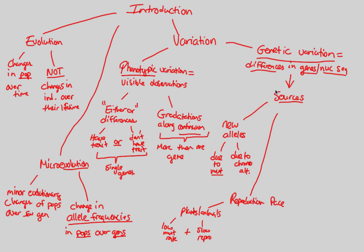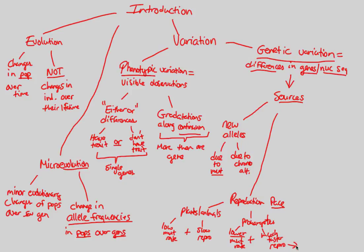Reproduction pace influences genetic variation. To understand it best, compare something slow and low to something different — prokaryotes. Prokaryotes actually have a lower mutation rate than we do, so why mention them in terms of reproduction pace? Because prokaryotes like bacteria have an absolutely much faster reproduction rate than we do. Just because they have a lower mutation rate doesn't mean they have fewer mutations — their rate is lower, but they have more mutations overall because they reproduce so much faster than plant-animal counterparts.